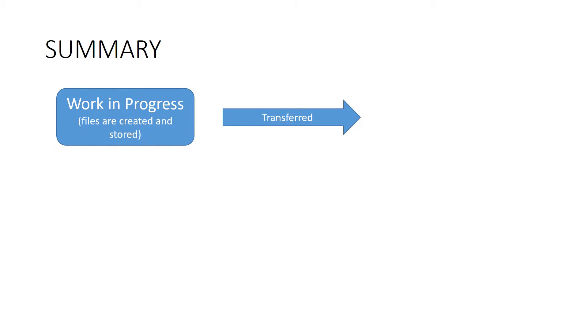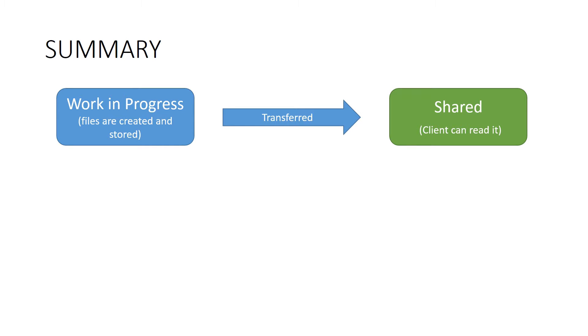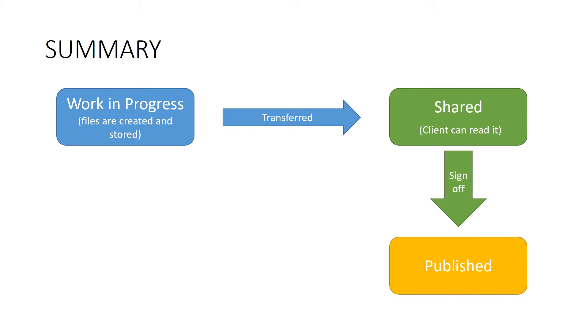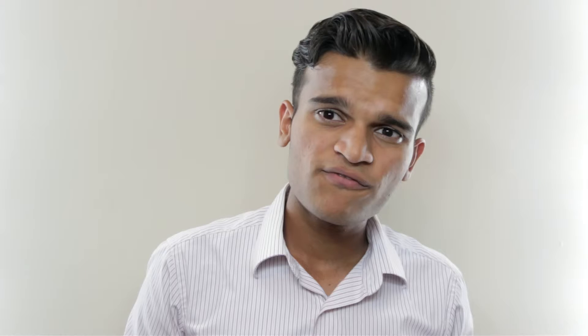To summarize: firstly, when content is originated by the modeler or anyone else, it is stored in the WIP folder. It is then transferred to the Shared folder, where the client has read access. After the client signs off those documents, it moves to the Published folder, and whenever a key milestone happens, it is transferred to the Archive folder.